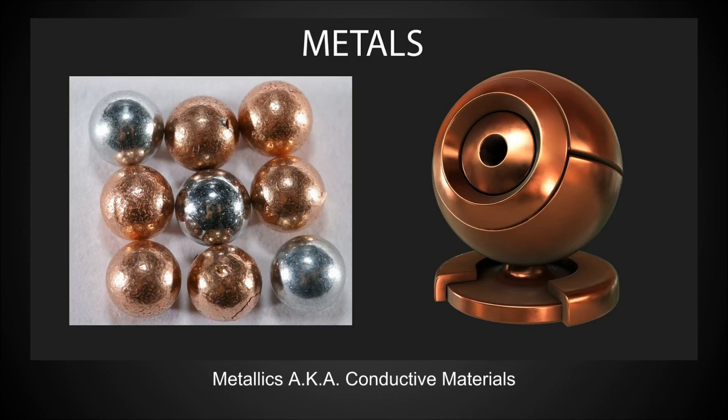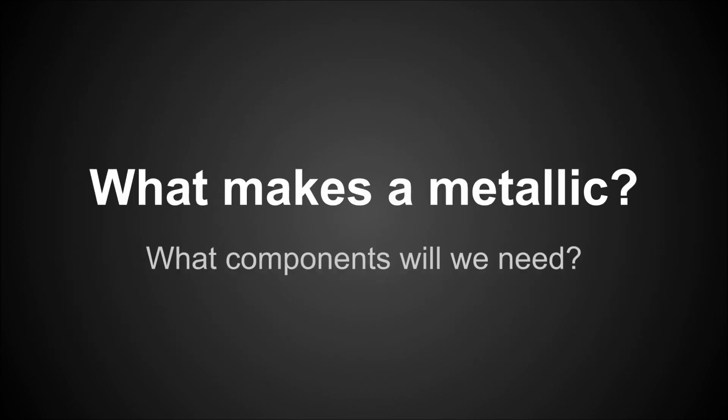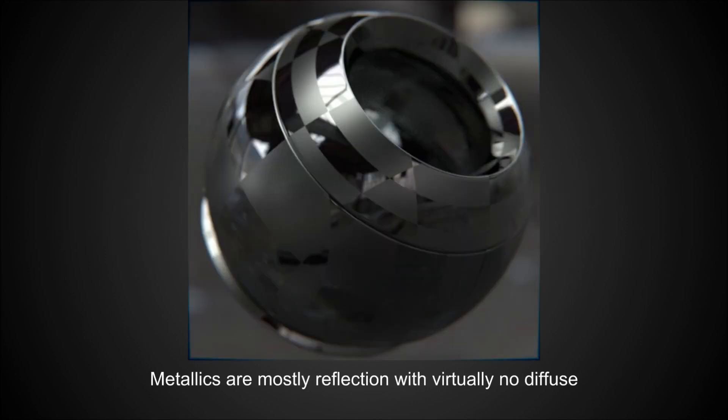Anyway, they're conductive, that is why. I assume it's because they conduct electricity, but I know it's because they interact with light in a weird way. So what makes a metallic? What behaviors are we going to need in order to model how they look? Well, first of all, metallics are mostly reflection with very, very little diffuse.